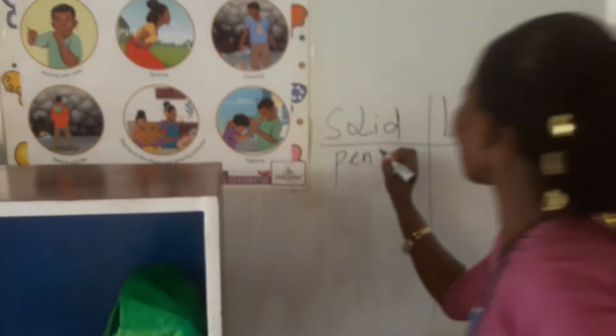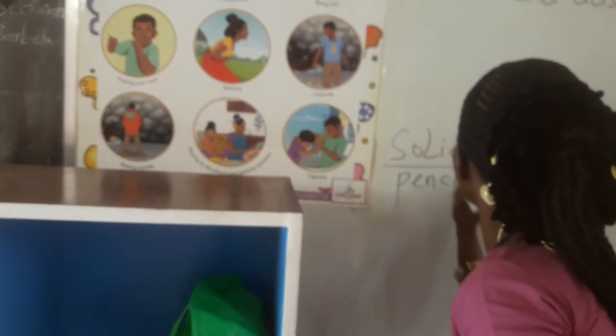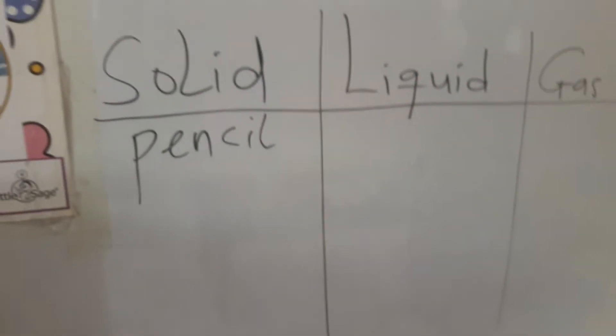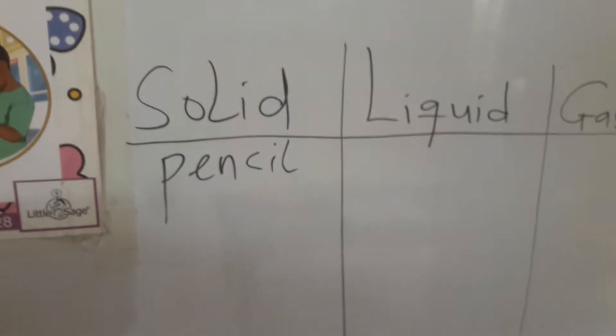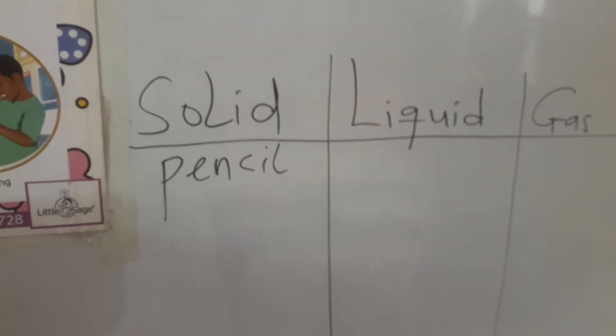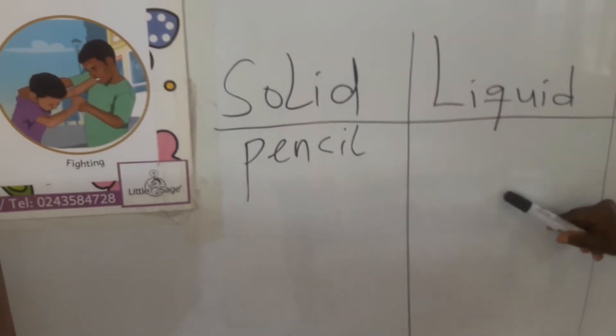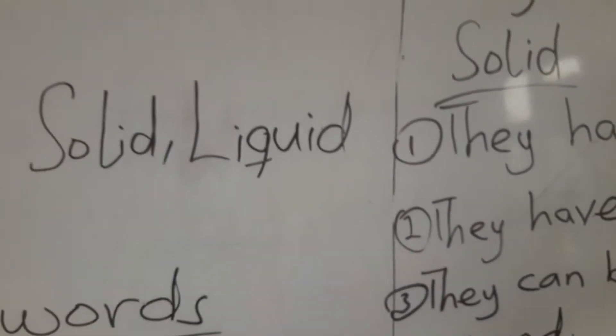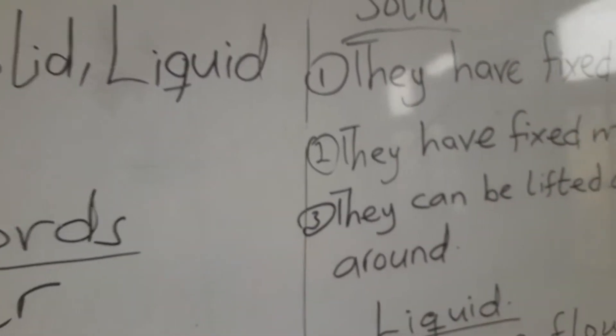Pencil is solid. Let's come to our physical properties of solid. They have fixed shapes. They have fixed mass — and we have talked about mass, which means weight. Three: they can be lifted and moved around.